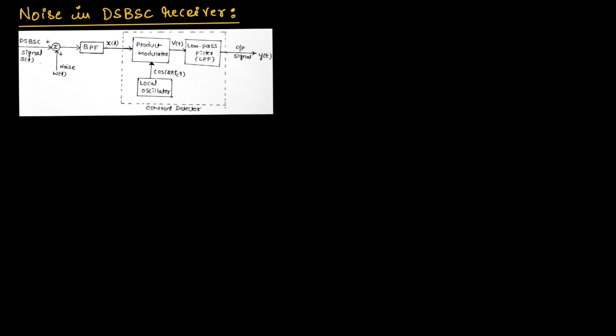We need to derive the expression for figure of merit of DSBSC receiver. To derive this expression, first we need to find the signal-to-noise ratio across the channel, then we need to find the signal-to-noise ratio across the output, then we need to take the ratio to find the figure of merit.